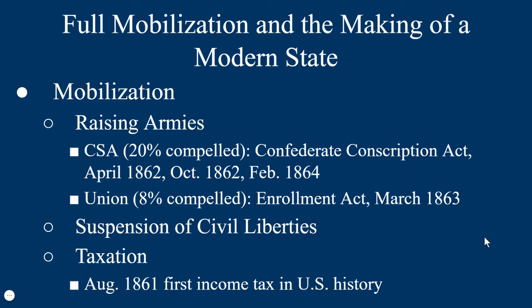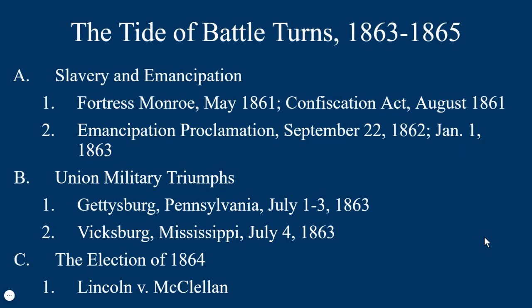We also see the suspension of civil liberties in both the Union and the South. Lincoln suspends constitutional protections, particularly around rights of the accused in capturing Confederate territories and handling prisoners of war. There's also the issue of taxation — in August 1861, we see the first income tax in U.S. history, issued to fund the war. The Union could collect these taxes because of its larger population; the Confederates could not.